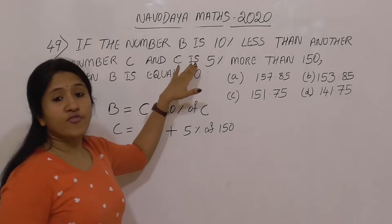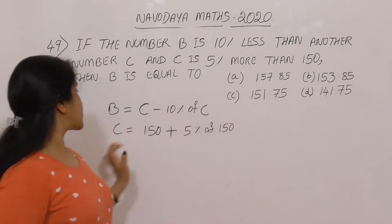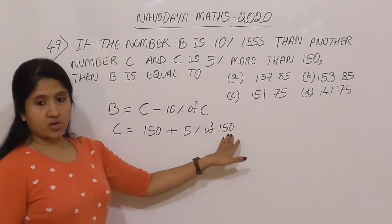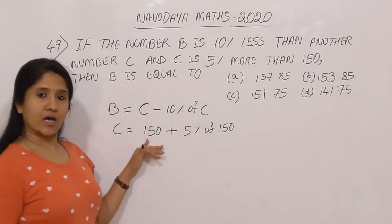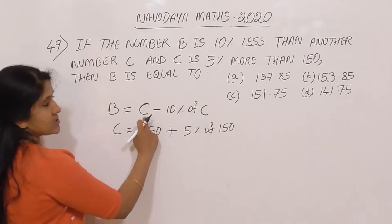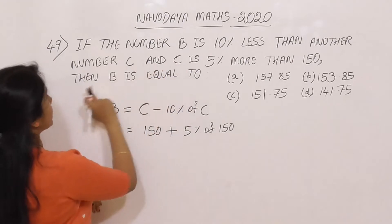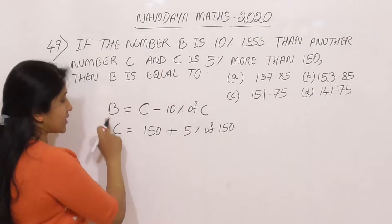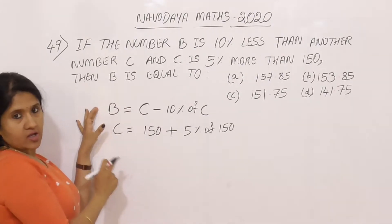C is 5% more than 150 — meaning C is 5% of 150 greater than 150 itself. To find B, we first need to find C. Once we have C, we can calculate B from that value.